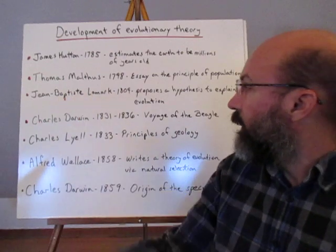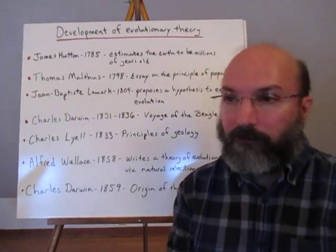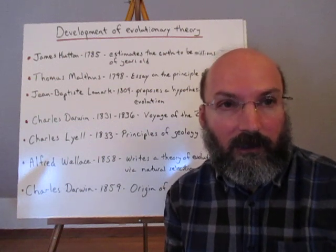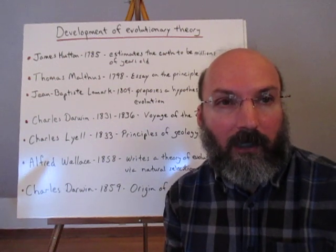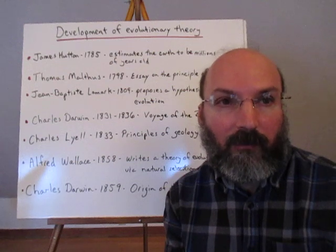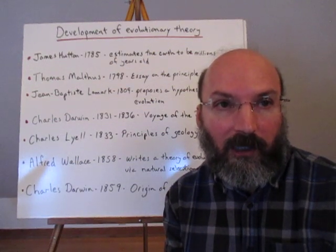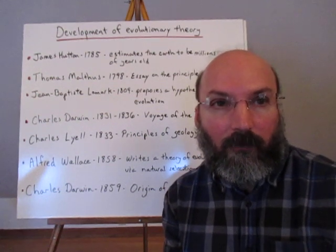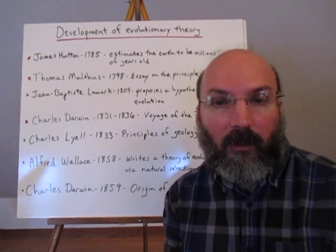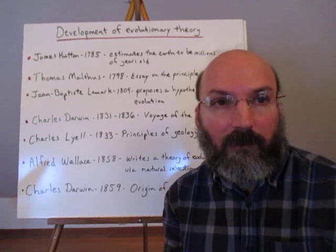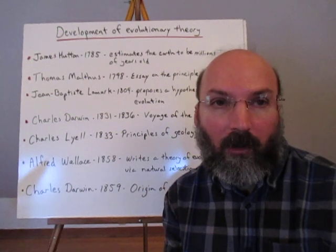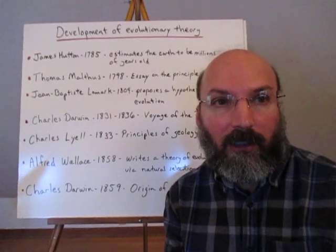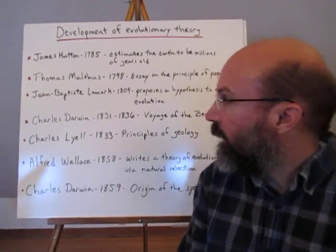Jean-Baptiste Lamarck proposed a theory of evolution based on acquired traits being passed on from one generation to the next. For example, a bonsai is trained to grow very small in a pot, so if we save the seeds from that small tree and plant them, its offspring should be very small. We know that's not true, but at least Lamarck had a theory — a theory that could be tested.